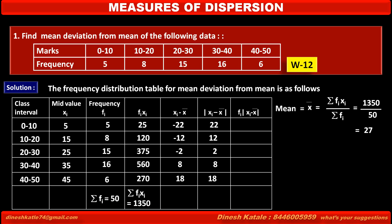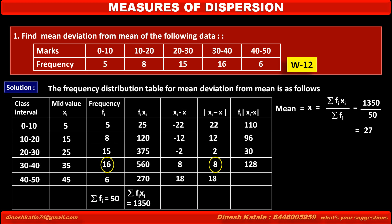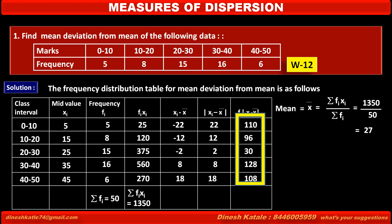In the last column, we find the products of frequency fi and the absolute deviation |xi − x̄|. So: 5 × 22 = 110, 8 × 12 = 96, 15 × 2 = 30, 16 × 8 = 128, and 6 × 18 = 108. The sum of all these products is equal to 472.